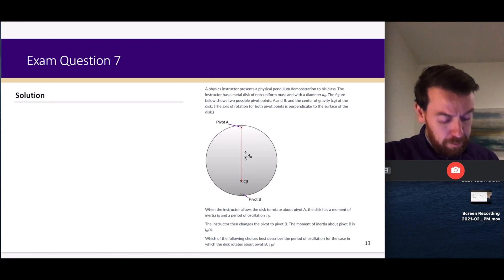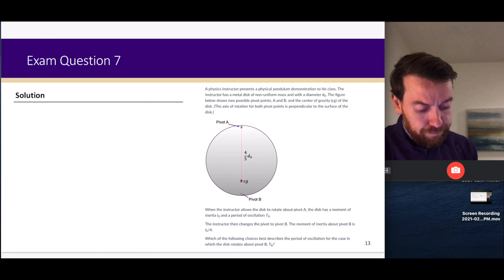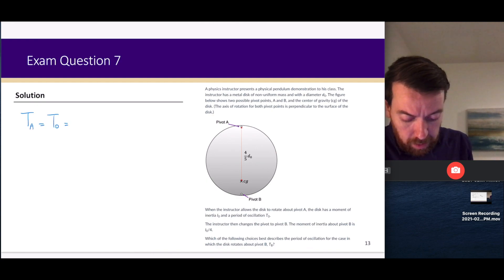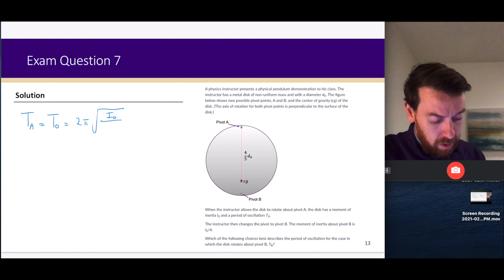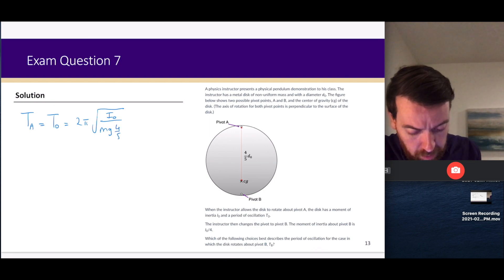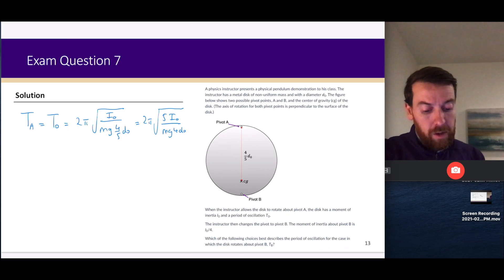Let's start with pivot point A and thinking about the period. T_A, which we're told is T₀, is going to be equal to 2π√(I₀/(mg·4d₀/5)). I'll simplify that somewhat—I'll bring the 5 up to the top, so it's 2π√(5I₀/(4mgd₀)). That's what we know T₀ to be equal to in terms of I₀ and d₀.